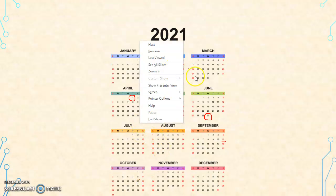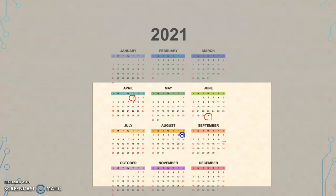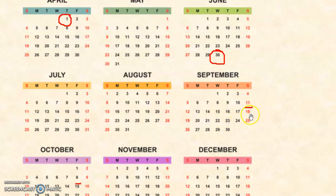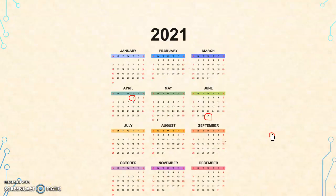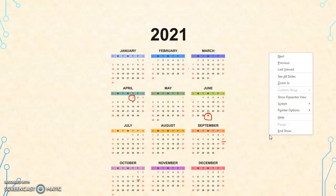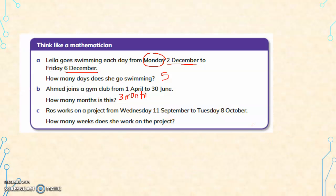Let us zoom in and see. From 11th September to 17th September is one week. Then 18th September to 24th September is week 2. 25th to 1st October is week 3. And 2nd to 8th October is week 4. So she works on the project for 4 weeks.